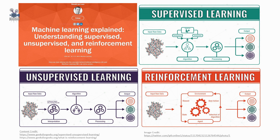The main points in reinforcement learning are: input — the input should be an initial state from which the model will start; output — there are many possible outputs as there are a variety of solutions to a particular problem; training — based on the input, the model will return a state and the user will decide to reward or punish the model based on its output. The model keeps continuing to learn, and the best solution is decided based on the maximum reward.